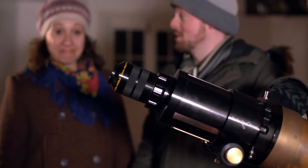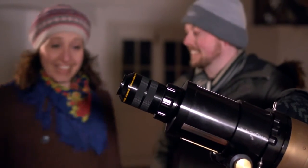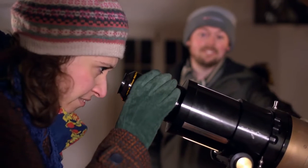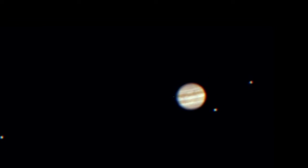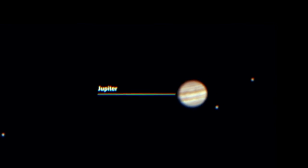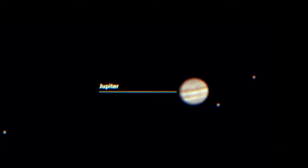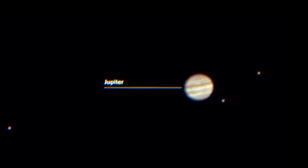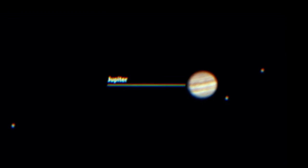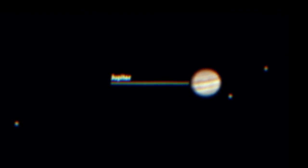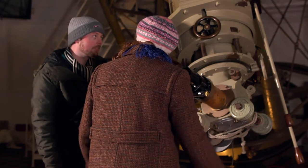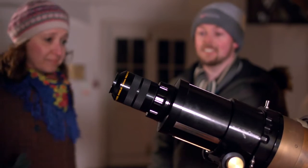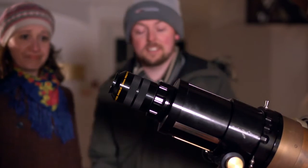I think it's about time we had a look at Jupiter. Looking through the eyepiece — wow, I can see the bright and dark bands across the surface of Jupiter. I can't quite see the great red spot, so that must be on the other side of the planet this evening. That makes sense.